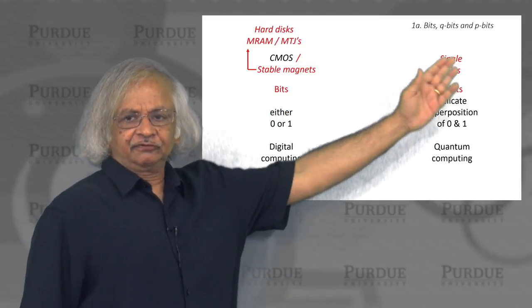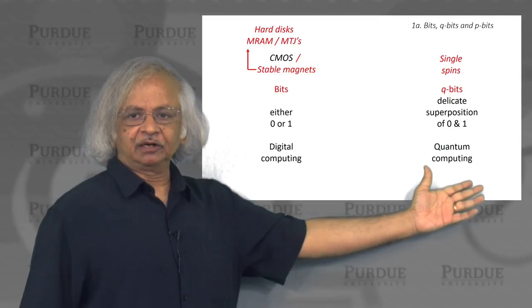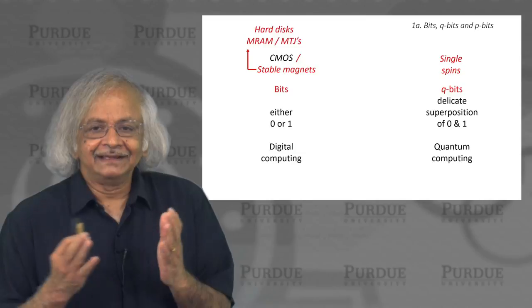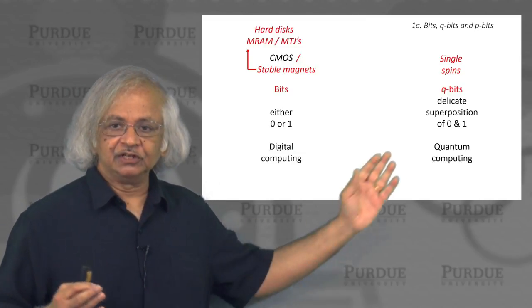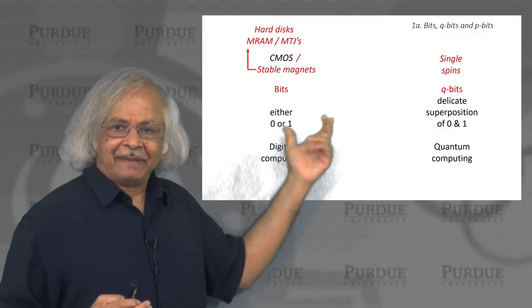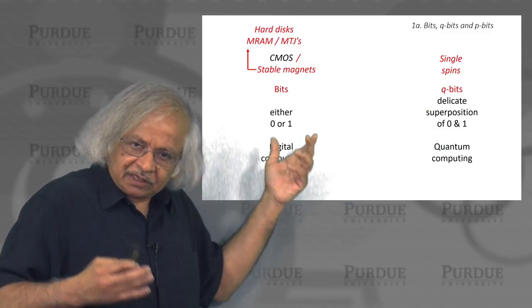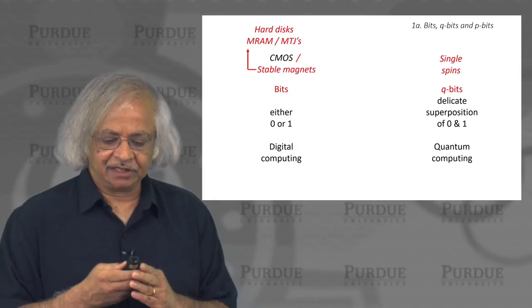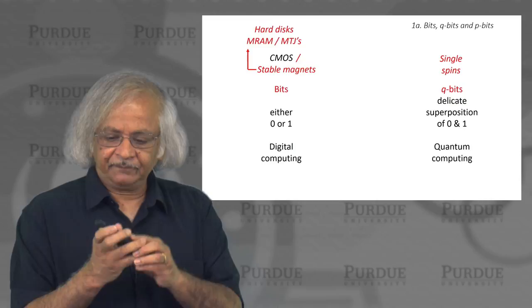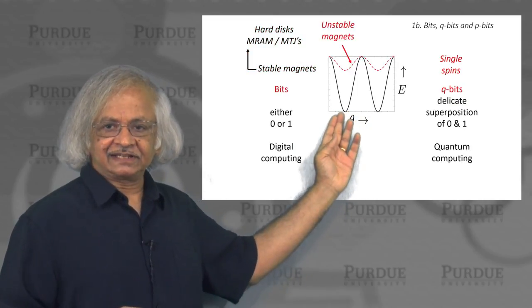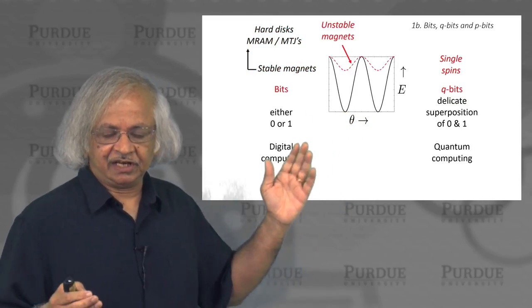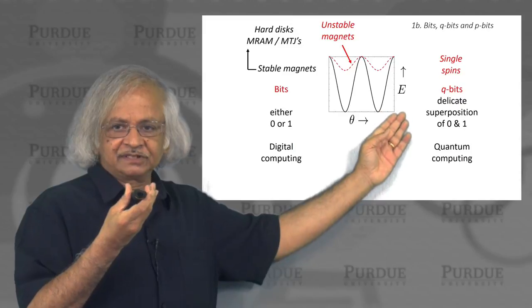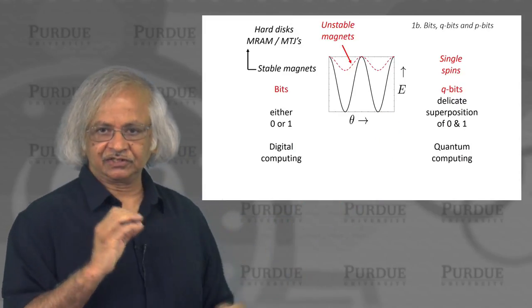At the other end is the field of quantum computing where the basic unit is these qubits, which are this delicate superposition of spins of 0 and 1. Magnets are also built out of spins, just that lots of spins due to their internal interaction point in one direction or the other. Usually you have an easy axis and the low energy state is one where all spins point in that direction, and if all of them point in the opposite direction, that's the other stable state.